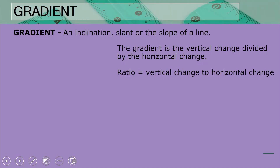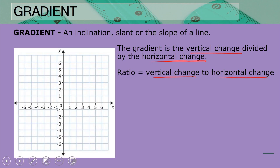Welcome back from the ad break and let's continue with our lesson. We are moving on to the next concept in our concept map, and that is the gradient. The gradient is an inclination, slant, or the slope of a line. The gradient is the vertical change divided by the horizontal change — a ratio of vertical change to horizontal change.